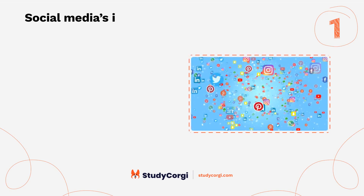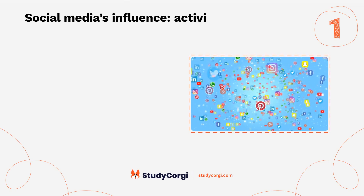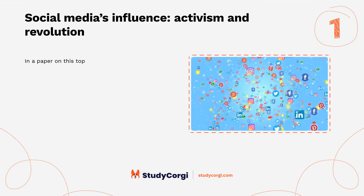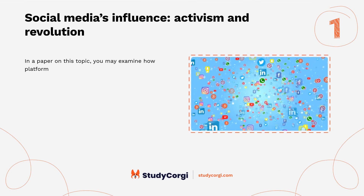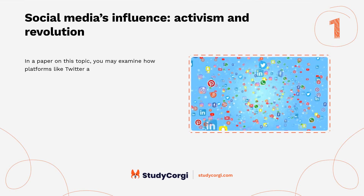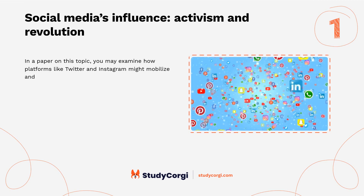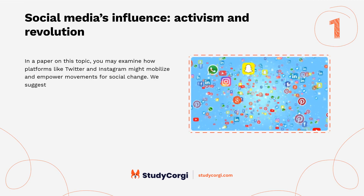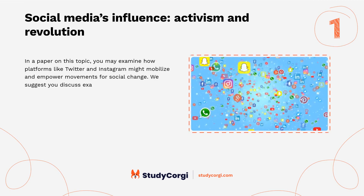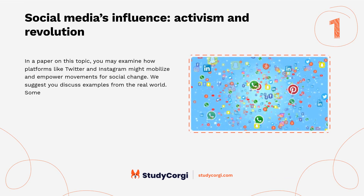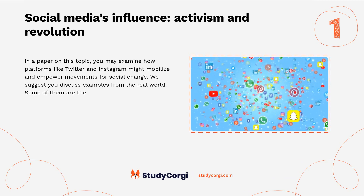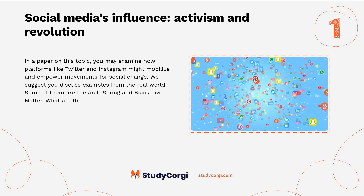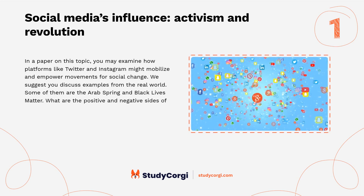Social media's influence: activism and revolution. In a paper on this topic, you may examine how platforms like Twitter and Instagram might mobilize and empower movements for social change. We suggest you discuss real-world examples such as the Arab Spring and Black Lives Matter, and explore the positive and negative sides of social media.